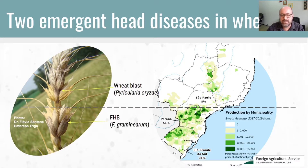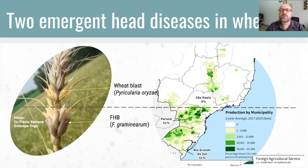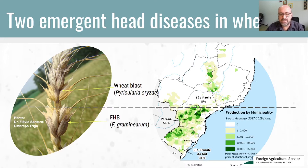First I'd like to show you this map of Brazil, where you can see where we grow wheat. Basically we grow wheat in the subtropics in two states — the state of Paraná and the state of Rio Grande do Sul — but we have an important area where wheat is expanding as a very important crop in the Central Western tropics. We have two different diseases occurring in these areas: wheat blast occurring in the north, in the tropics, and Fusarium head blight — two emergent head diseases. Fusarium head blight occurs basically in the south, in the subtropics, where it's wet and humid.